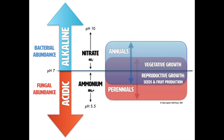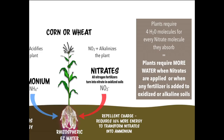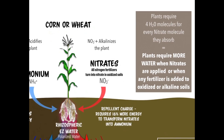There are too many nitrates, or the plant has taken up too much energy trying to process them — it takes 16% more energy than normal to take in nitrates and process them into a usable form. So it's taking four times as much water and 16% of its energy, sapping it.